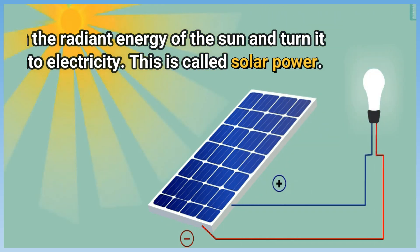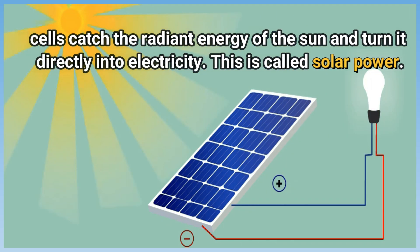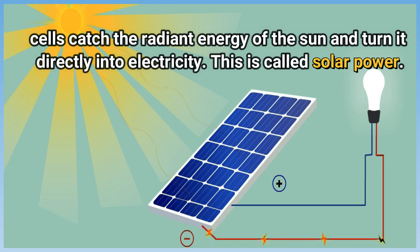Cells catch the radiant energy of the sun and turn it directly into electricity. This is called solar power.